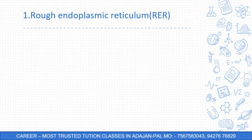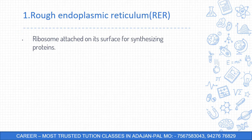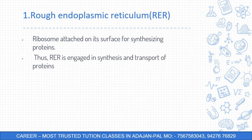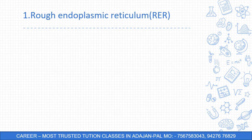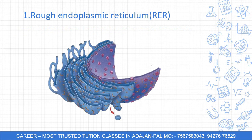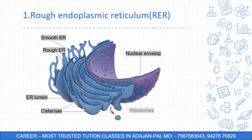Now let us focus on the types of endoplasmic reticulum. The endoplasmic reticulum is mainly of two types. One type has ribosomes attached on its surface — because ribosomes are present, they synthesize proteins, so this type is called rough endoplasmic reticulum (RER). Its role is the synthesis and transport of proteins. Due to the presence of ribosomes, the appearance of this ER looks rough, which is why it is called rough endoplasmic reticulum.